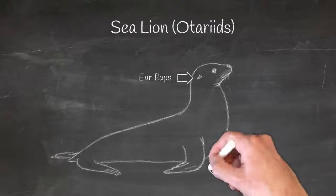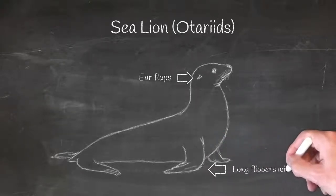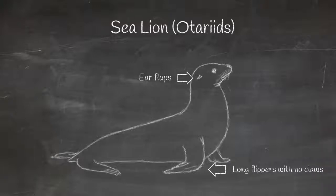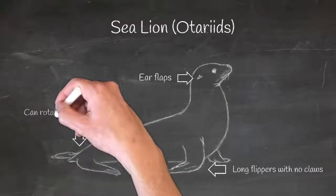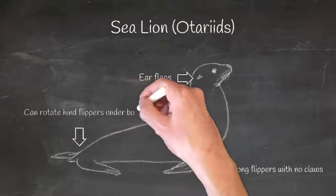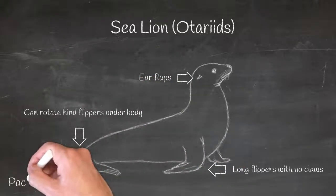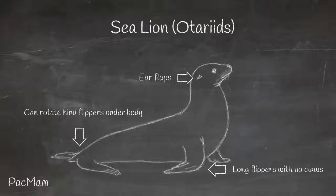Second, they have long front flippers that they can push themselves up with that don't have claws, but their hind flippers do. Third, they have the ability to tuck their hind end underneath them to be able to walk, which makes them much more agile on land compared to seals.